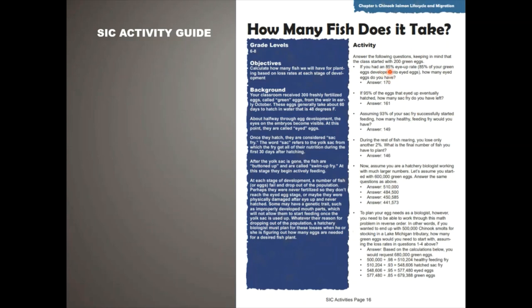Basically, if you have an 85% eye-up rate — meaning 15% of your eggs were white and dead in the hatchery trays — 85% of your eggs develop from green eggs into eyed eggs. How many eggs do you have if you start with 200? Well, it's 170. You can go through all these different situations. This is the kind of math that hatchery managers do all the time.